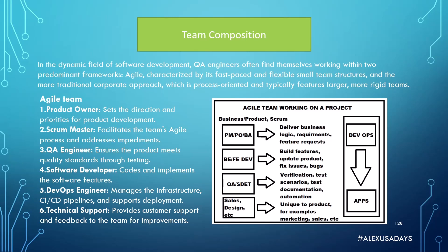You can look at the agile structure like this diagram here. At the very top we have business — product, wisdom, scrum, and business analysts — whose main goal is to deliver business logic, work on requirements for future requests, and work with customers to get direction on where we're going. After that, you will have back-end and front-end developers — engineers that build the product, implement features, and do updates when bugs are found.